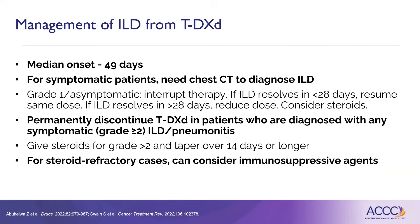How do we manage this? The median onset was 49 days, so it typically doesn't happen right away. For a patient who has symptoms, you need to get a CT scan of the chest to diagnose it. Grade 1 is asymptomatic — you can interrupt therapy, you don't have to use steroids, and if it resolves on its own you can re-challenge. Anything beyond grade 1, you're supposed to permanently discontinue the drug — any symptomatic ILD or pneumonitis. That's different from immunotherapy, where even with symptomatic pneumonitis you manage with steroids and re-challenge. Per the package insert, anything symptomatic means permanently discontinue, give steroids, and taper over 14 days or longer. For steroid-refractory cases, you can consider other immunosuppressive agents, even though this isn't typically immune-related like immunotherapy.